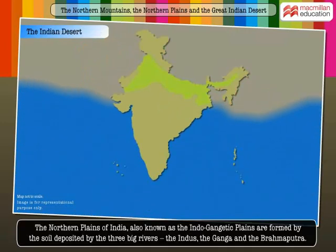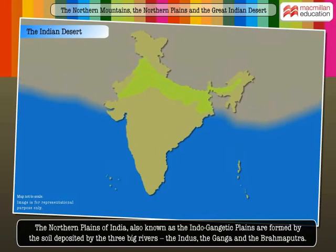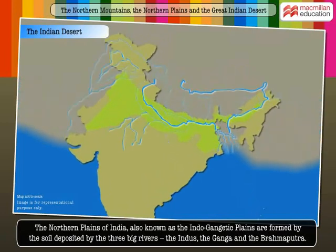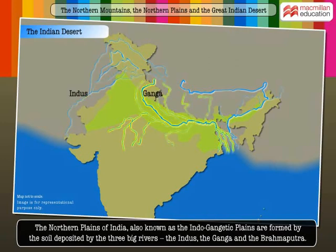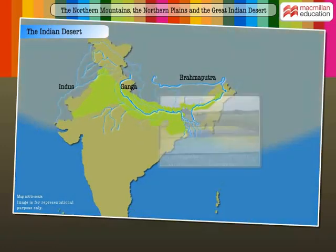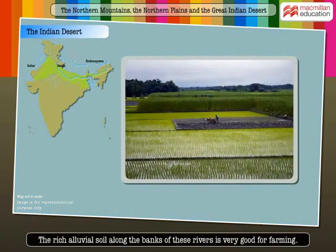The Northern Plains of India, also known as the Indo-Gangetic Plains, are formed by the soil deposited by three big rivers — the Indus, the Ganga and the Brahmaputra. The rich alluvial soil along the banks of these rivers is very good for farming.